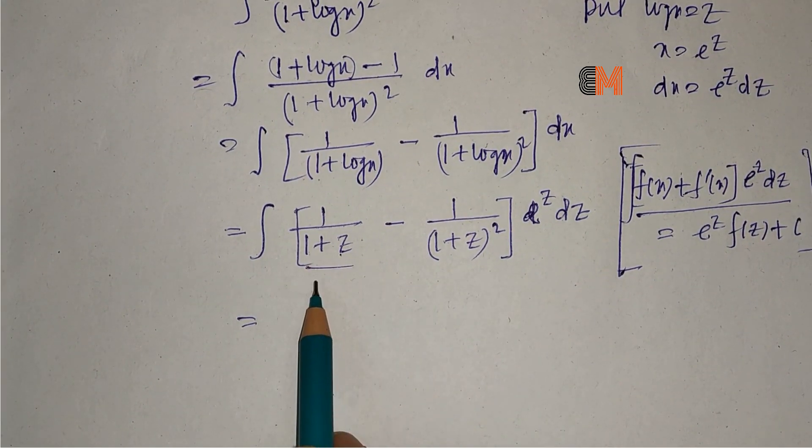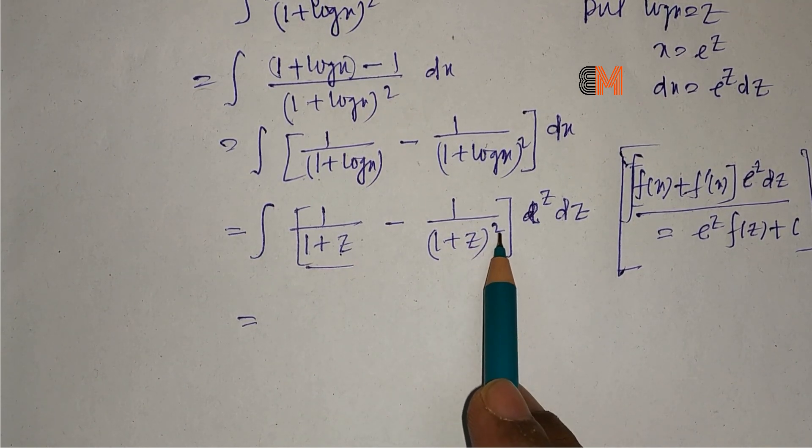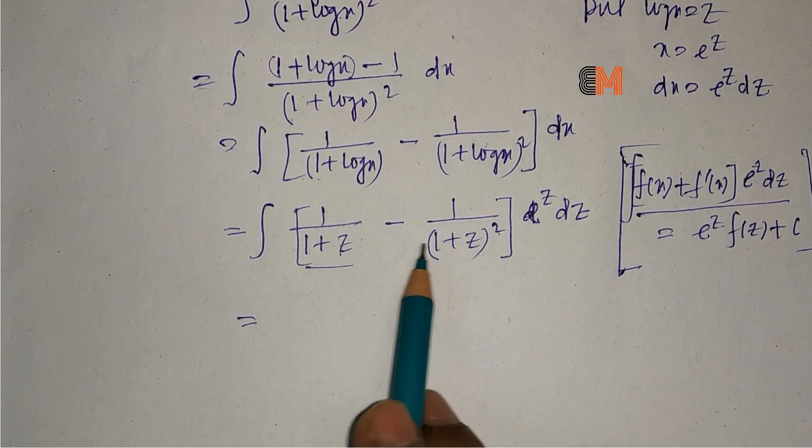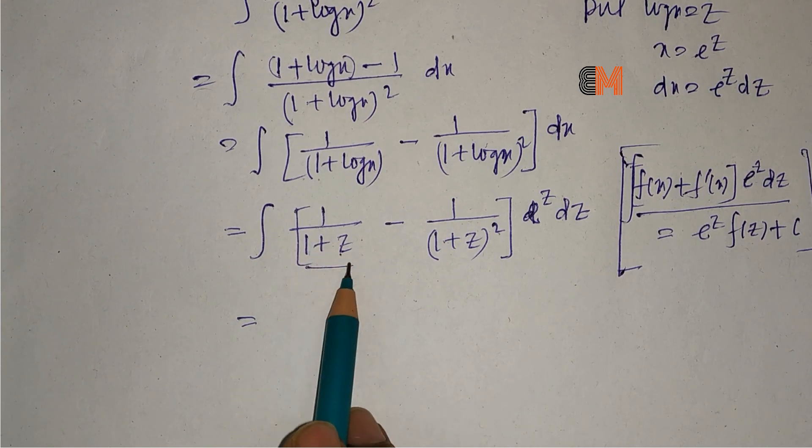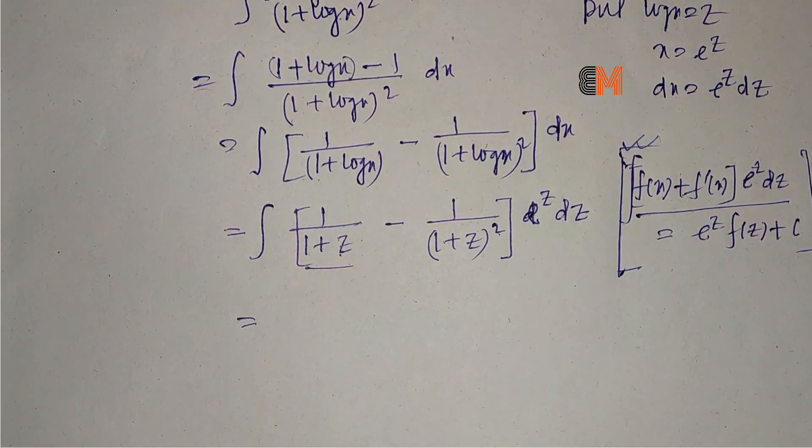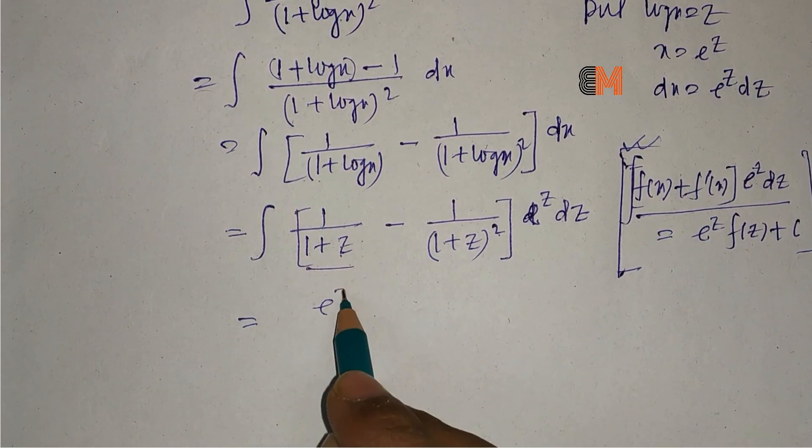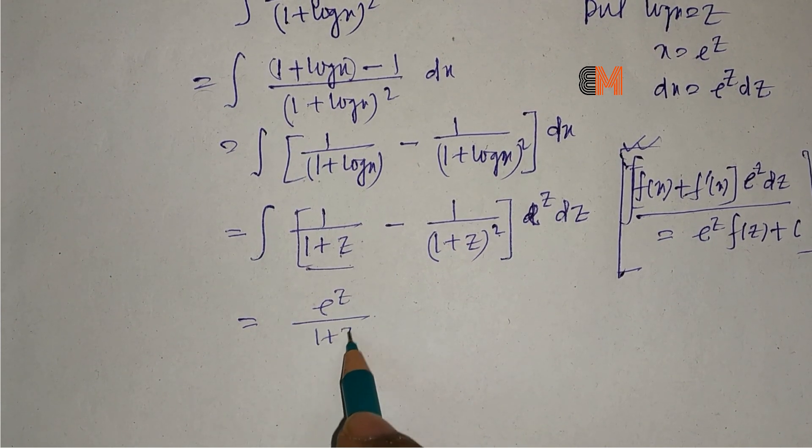We can clearly see that 1 divided by (1 + z) whole squared is the derivative of 1 divided by (1 + z), so we can apply this theory here. We have the answer: e to the power z divided by (1 + z) plus c.